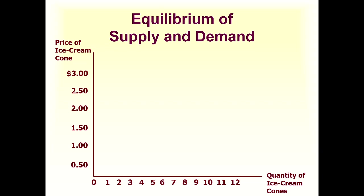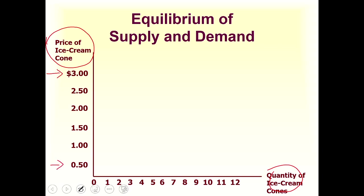Here we have the graph. On the x-axis we have the quantity of ice cream, on the y-axis we have the price of ice cream cones. Here we have prices which range from 0.5 to 3 dollars, and the quantity ranges from 0 to 12.